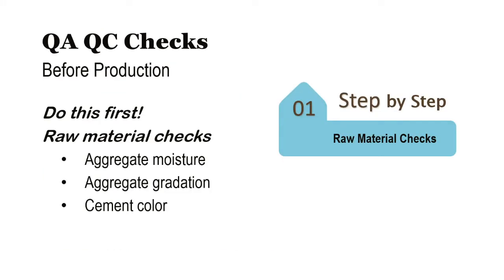Quality control is a very broad topic that we can split into three areas. First is raw materials. We must use good quality, consistent raw materials because garbage in equals garbage out. Using inconsistent, out-of-spec, or unsound materials makes it likely that we'll have problems down the road.